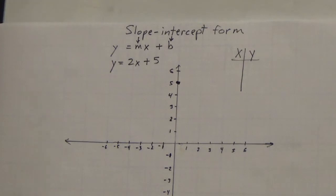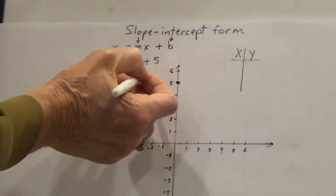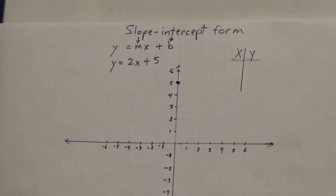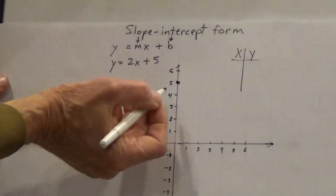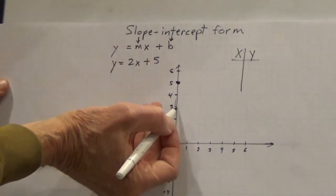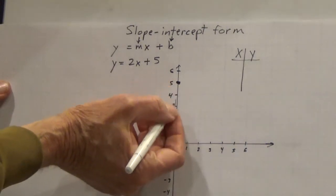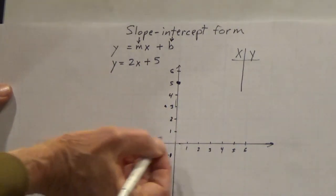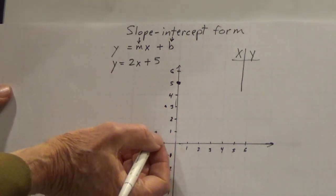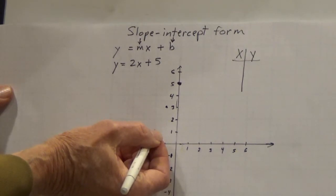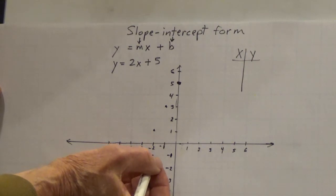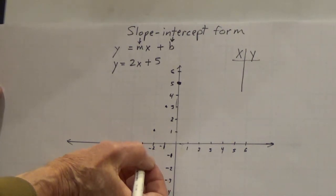Then I'm going to go 2 up, 1 over. If I go 2 up, 1 over I'm a little bit above my graph, so I want to go 2 down, 1 back to stay on the grid pretty well. As long as I'm decreasing here and decreasing here, that'll be fine. 2 down, 1 back to that point. And then 2 down, 1 back to this point, and another 2 down, 1 back.